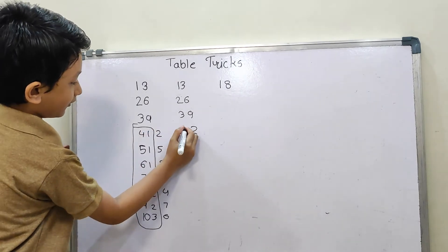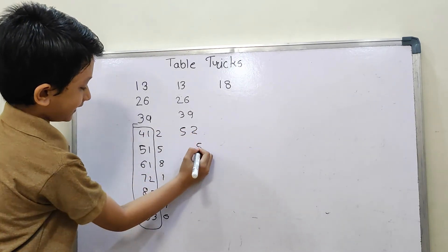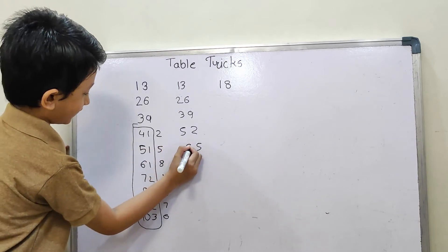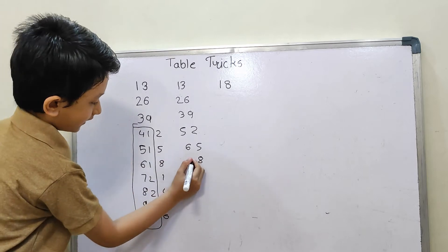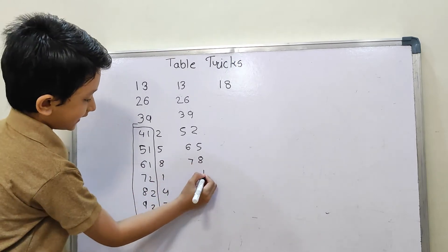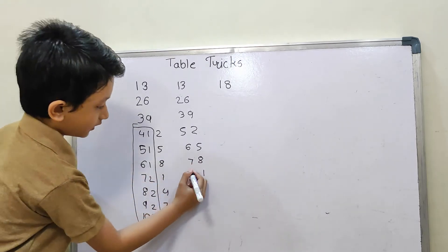4 plus 1 equals 5, 5 as it is, 5 plus 1 equals 6, then 8 as it is, 6 plus 1 equals 7, then 1 as it is, then 7 plus 2 equals 9.